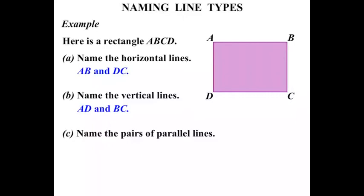Name the pairs of parallel lines. Well, looking at those two lines there, they are the horizontal lines. They are parallel. So AB and DC.